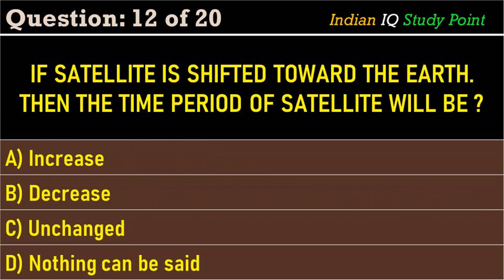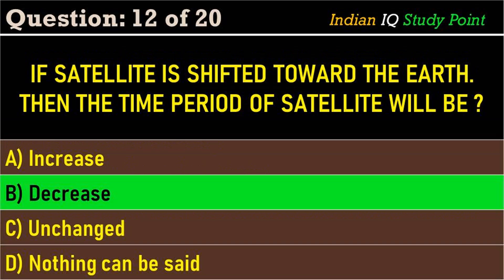Coming to the next question: a satellite is shifted towards the earth — then the time period of the satellite will be — option A: increase. Option B: decrease. Option C: unchanged. Option D: nothing can be said. The correct answer is option B: decrease.